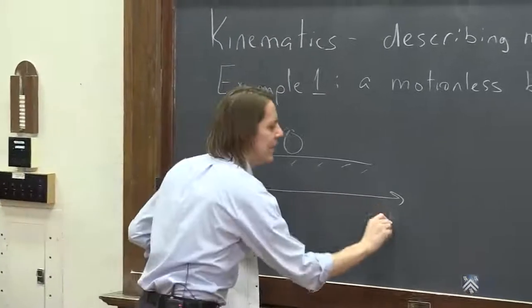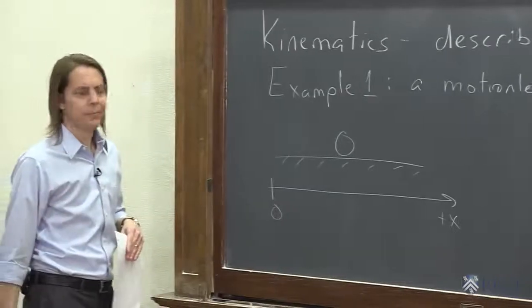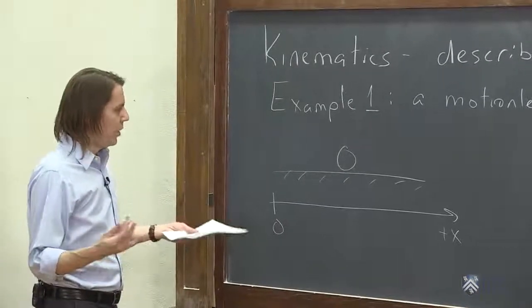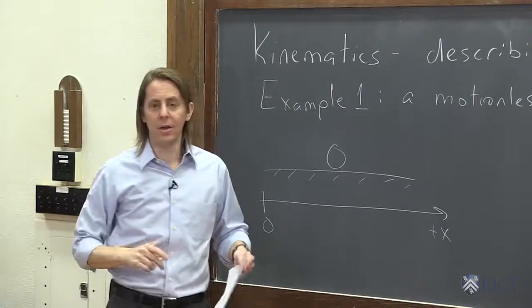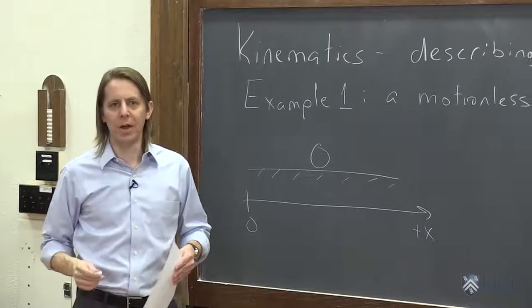So to describe the position of something mathematically, we have to draw an axis. We'll call this the x-axis. This way is plus x, and we'll put the origin where x equals 0 right there. We can think about where HAL is on the axis. That would be the equation part. And we can make a plot of where he is on the axis. That would be the graph part.